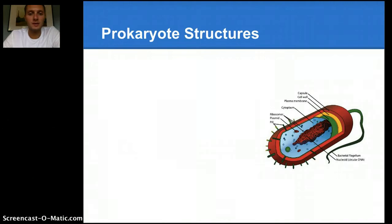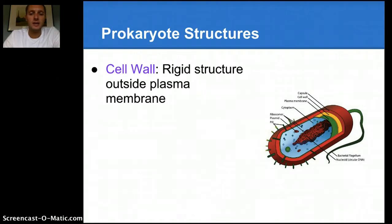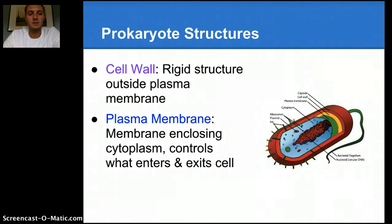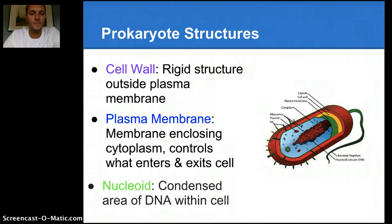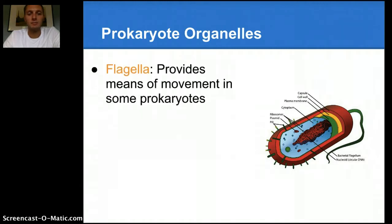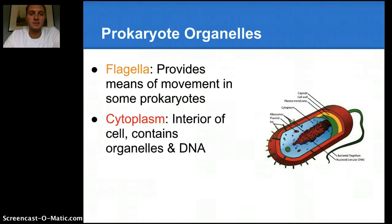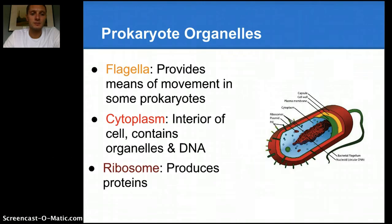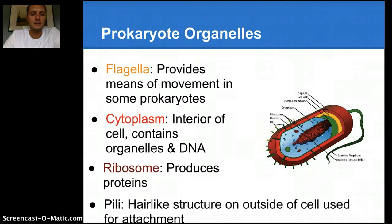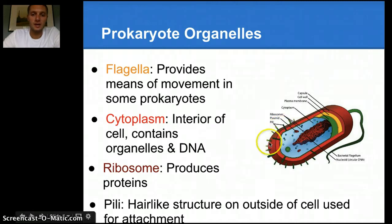Let's look at some of these structures a little bit more closely. The cell wall is a rigid structure outside the plasma membrane — it helps give the cell support and structure and also controls a little bit what goes in and out of the cell. The plasma membrane controls what enters and exits the cell. The nucleoid is a condensed area of DNA within the cell. Flagella provides a means of movement in some prokaryotes — not all prokaryotes have them, but a vast majority do. Cytoplasm is the interior of the cell; it contains organelles and DNA, and is also the location where chemical reactions take place. Ribosomes produce proteins. And lastly, pili are hair-like structures on the outside of the cell used for attachment — prokaryotes interact with one another often, and one of the ways they can attach is through these pili.